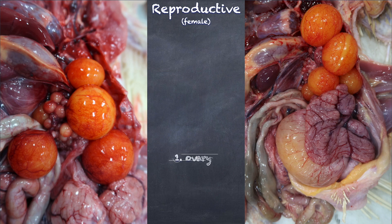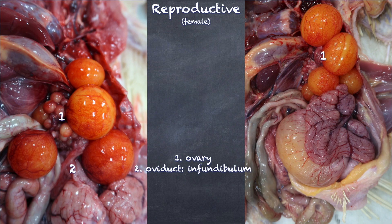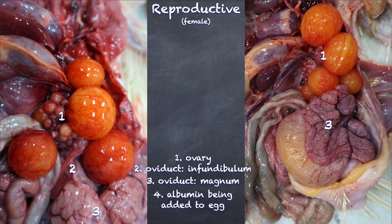Here we see the ovary with numerous developing follicles — this is essentially where the yolk is being produced. We then have the oviduct divided into multiple portions. We have the infundibulum, which is where the ovum is going to be taken in. Then we have the magnum portion of the oviduct — this is the largest portion, hence the name magnum — where albumen is being added to an egg.